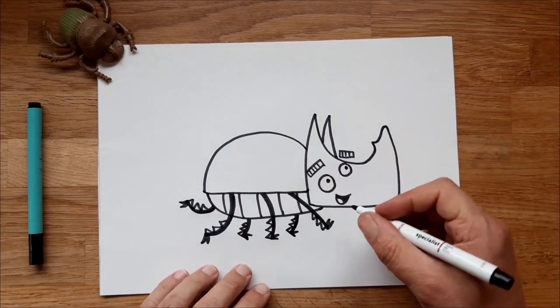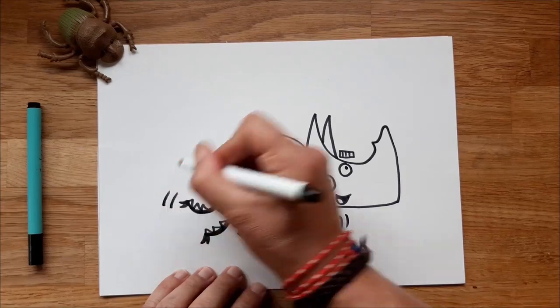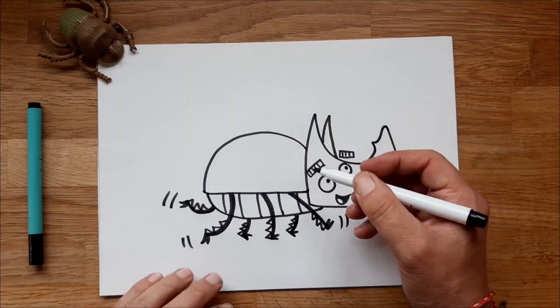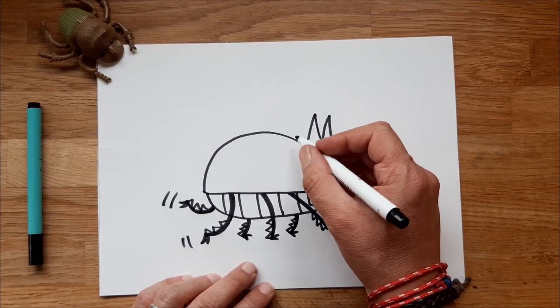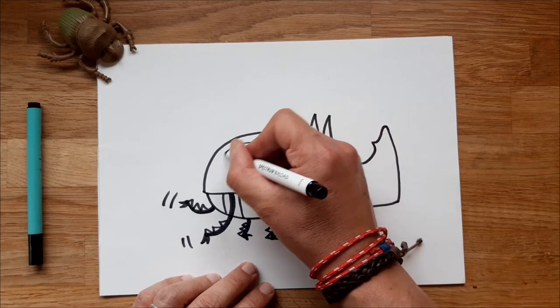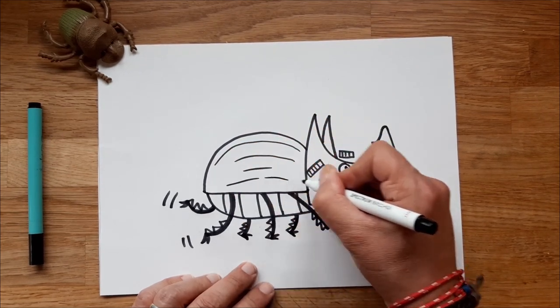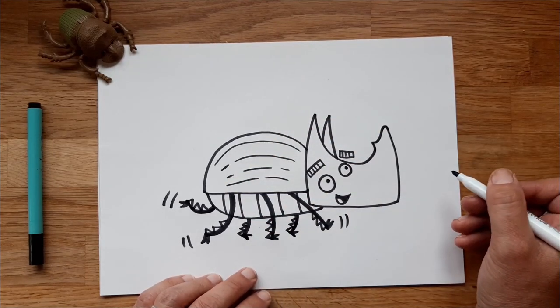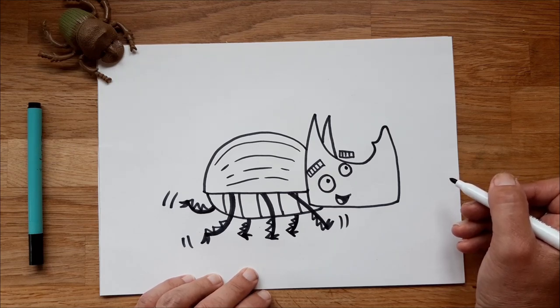If you want, we can add some motion lines by his feet, like that, just to show that he's scurrying along at quite a pace. And also, if you want, his beetle back has a bit of texture on it. So just draw some sort of faint lines like that to show a bit of texture on his case and his shell-like back. So there we have it. That is how you draw Rex the Rhinoceros Beetle.